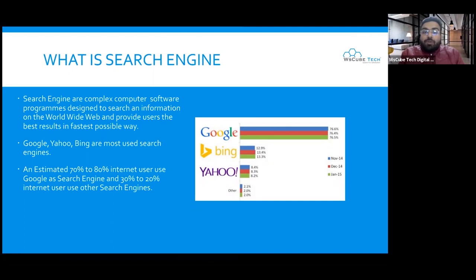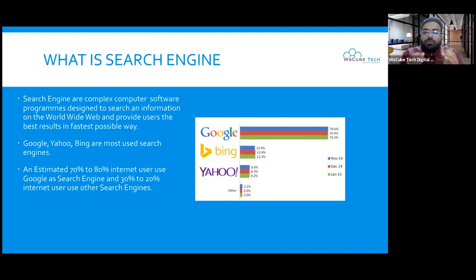Why is it complex? Because a search engine basically has hundreds of billions of websites — it has data, and it provides results. So what do we say? Complex computer programs designed to search for information on the World Wide Web, and provide users the best results in the fastest possible way. This is how complex it is.